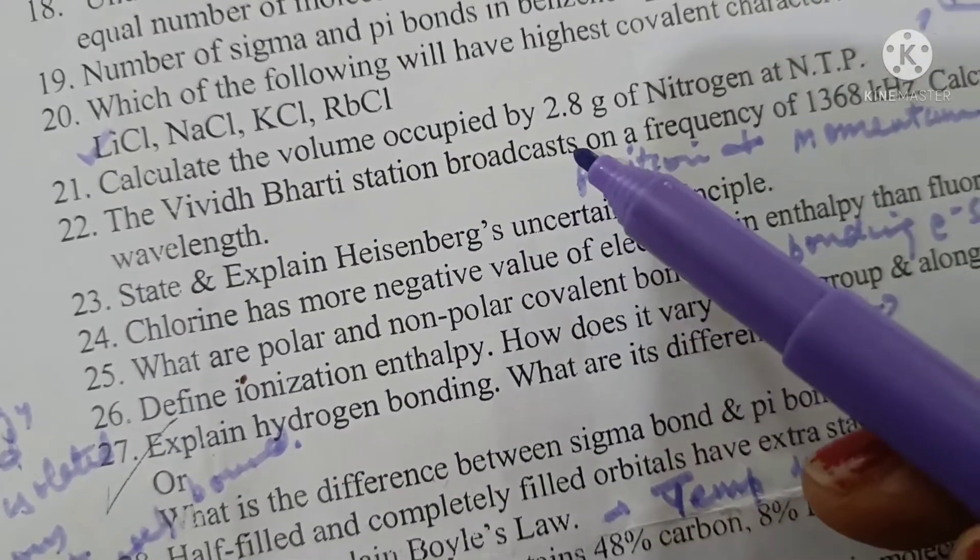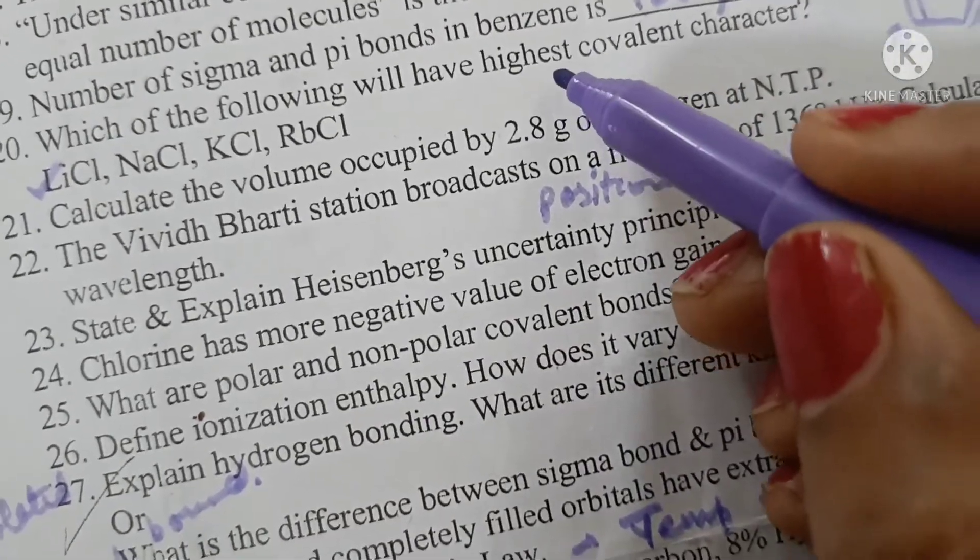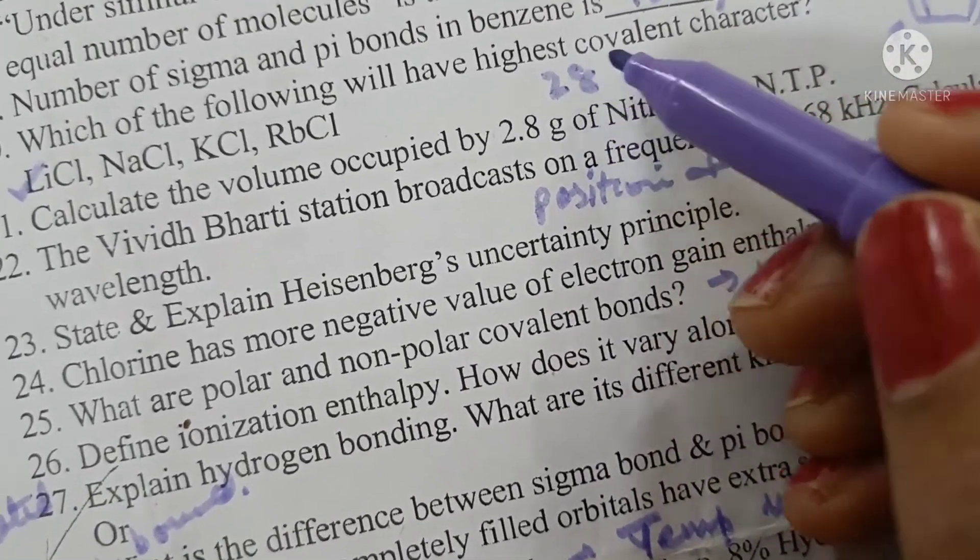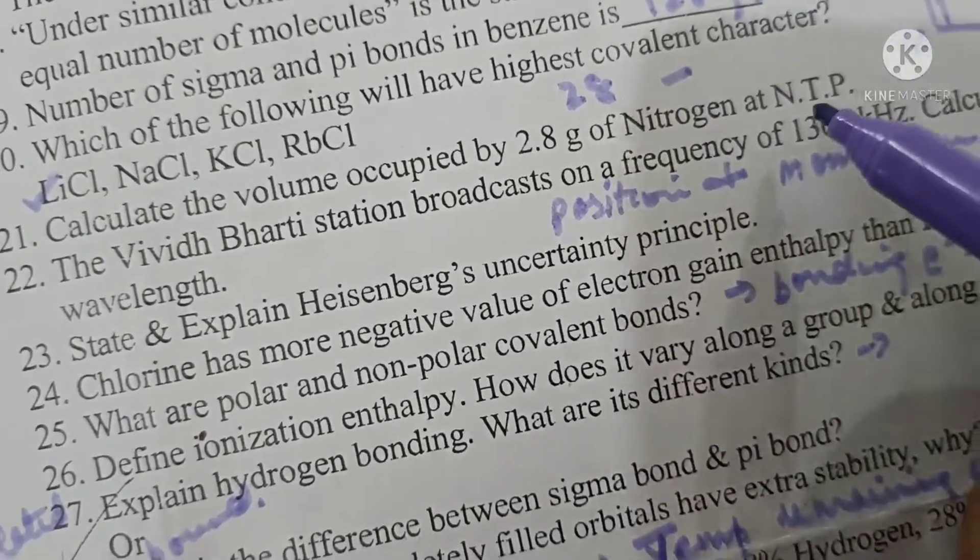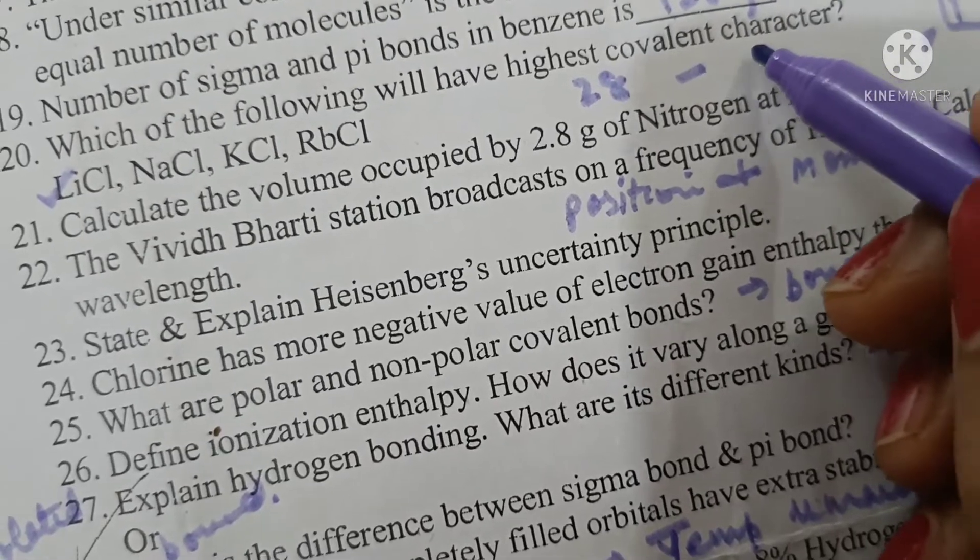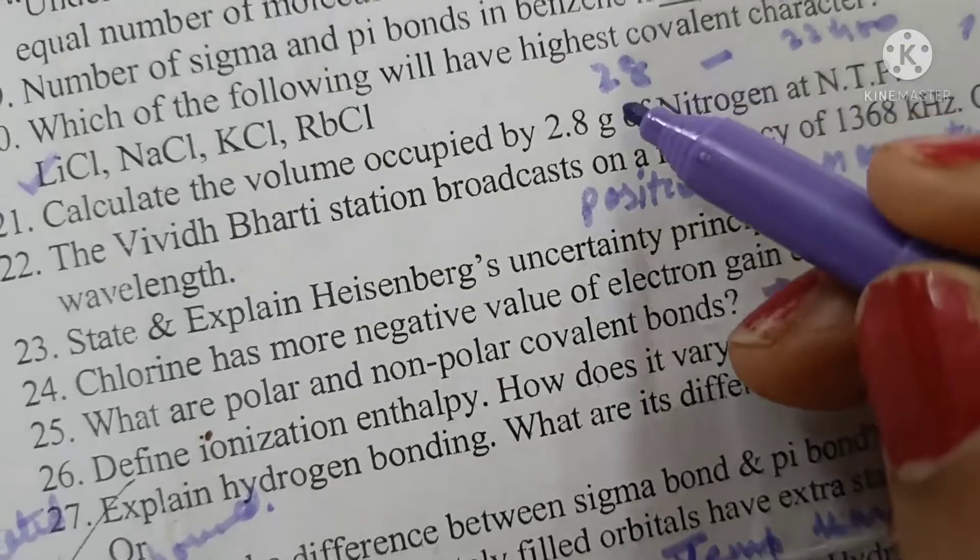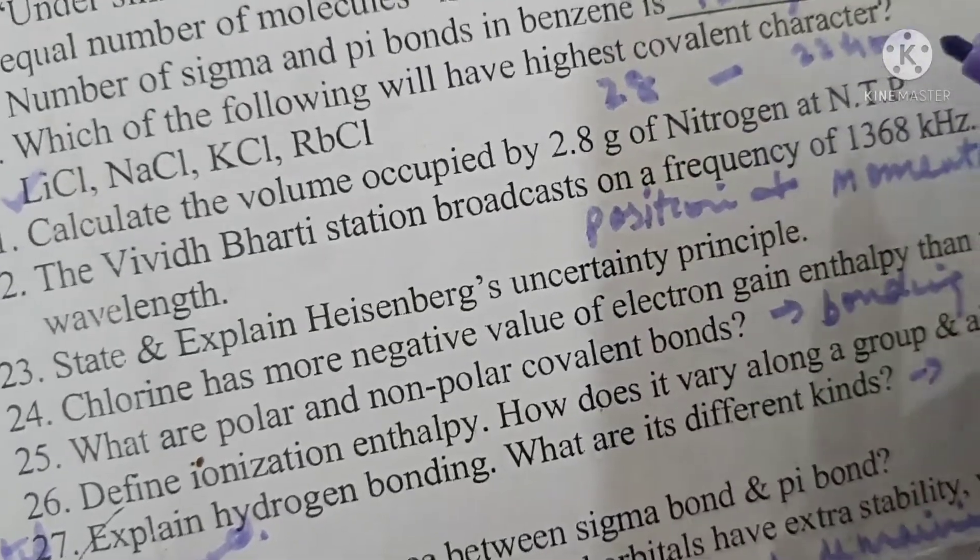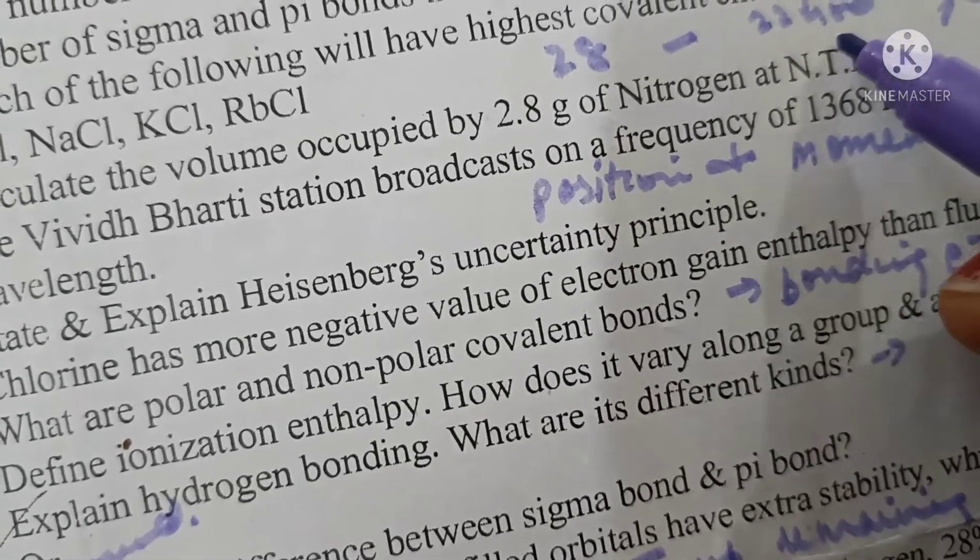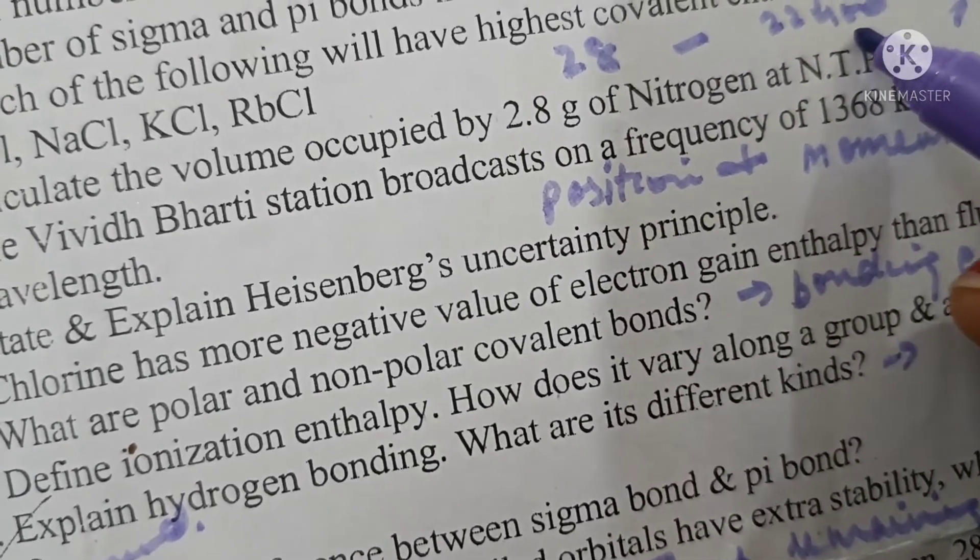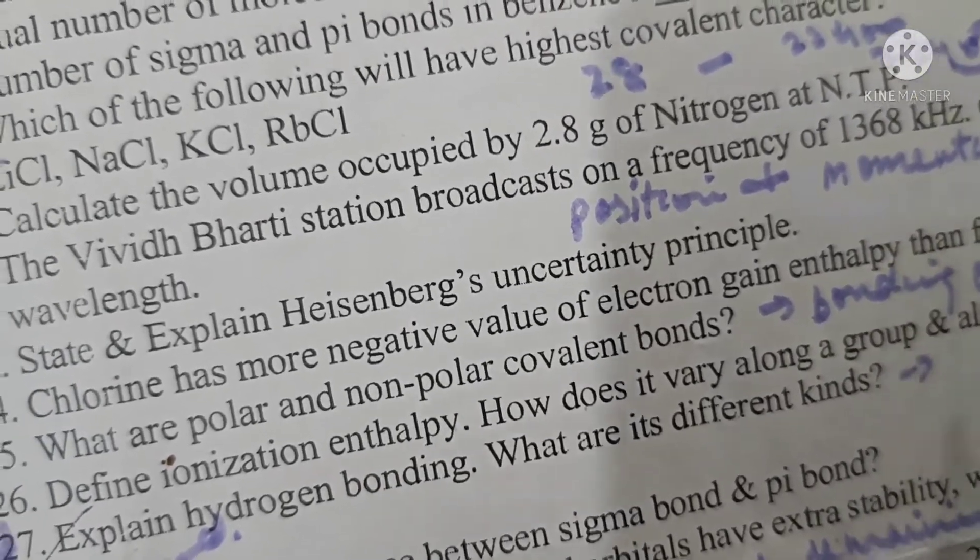Calculate the volume occupied by 2.8 grams of nitrogen at NTP. One mole of nitrogen is 28 grams and one mole at NTP occupies a volume equal to 22.4 liters or 22,400 milliliters. So 2.8 grams will occupy 22,400 upon 28 into 2.8 which is 2240 milliliter of volume.